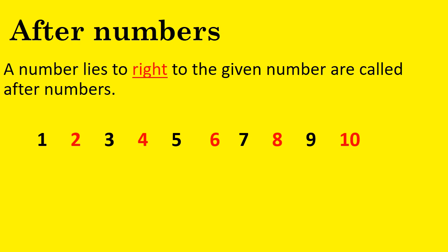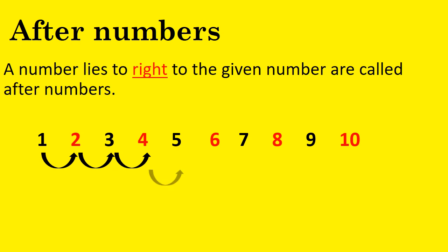You can see here: 2 is right to 1, so 2 comes after 1. 3 is right to 2, so 3 comes after 2. 4 is right to 3, so 4 comes after 3. 5 is right to 4, so 5 comes after 4. 6 is right to 5, so 6 comes after 5.